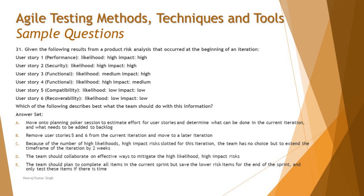Option B says: remove user story 5 and 6 from the current iteration and move to a later iteration. Just because the risk is low does not mean you blindly move things to the next sprint. At this point we don't know if we have time to complete all the tasks because the planning poker session hasn't happened yet. Until estimation is done, you cannot make that decision.